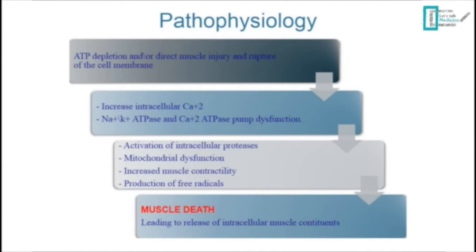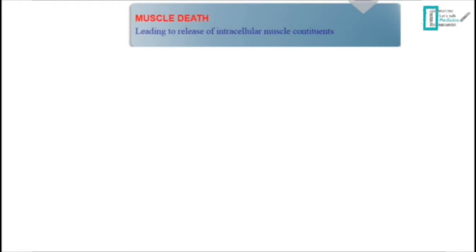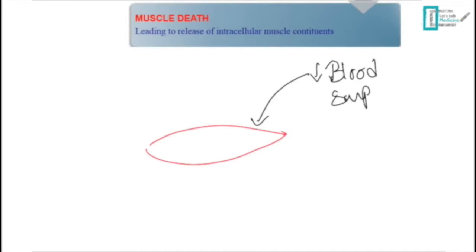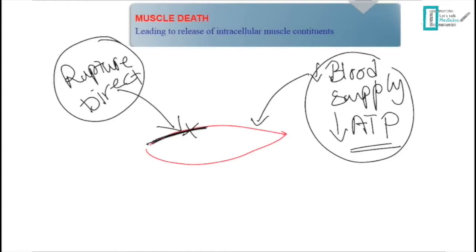Let's talk about the pathophysiology with a simple drawing. We have a muscle, and either you have decreased blood supply — which leads to decreased ATP, so the muscle won't generate enough ATP — or you have a direct muscle injury that leads to rupture of the cell membrane. In rhabdomyolysis, either or both of these mechanisms can occur together to produce the condition.